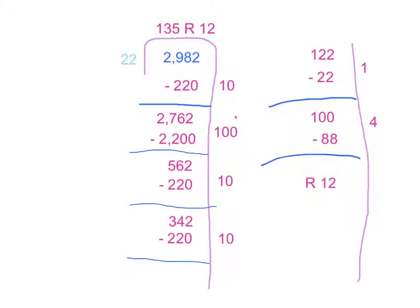I have a remainder of 12. But I can't fit any more 22s into 12, so that goes up there. I add up all of these, which would make 135 remainder 12.